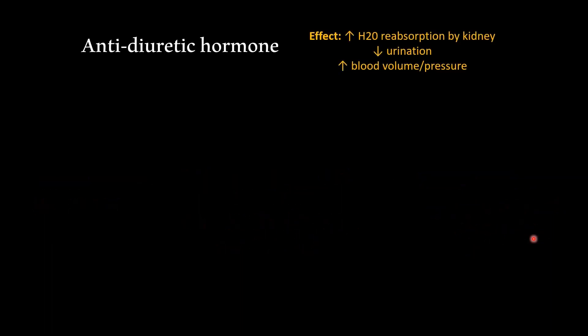We're going to look at antidiuretic hormone and see how it follows that basic pattern. You want to have the effect memorized, because the other parts of the pathway are going to relate back to the effect and will be easier to remember if you've already memorized it. The main effect is you're going to increase H2O reabsorption by the kidney. Reabsorption means you're putting it back into the bloodstream instead of letting yourself urinate it out. Because you put it back into the bloodstream, you decrease urination, and over time in combination with drinking, that can also increase your blood volume and blood pressure.